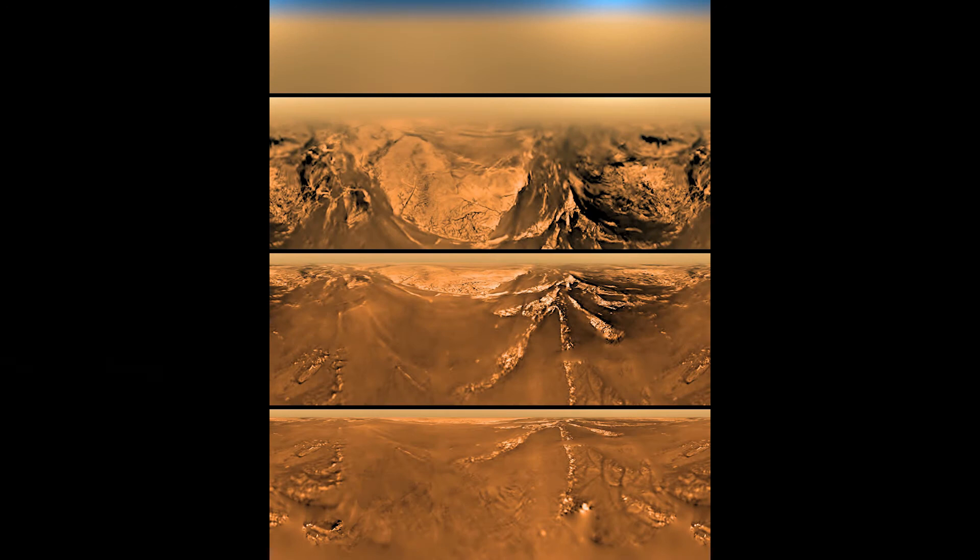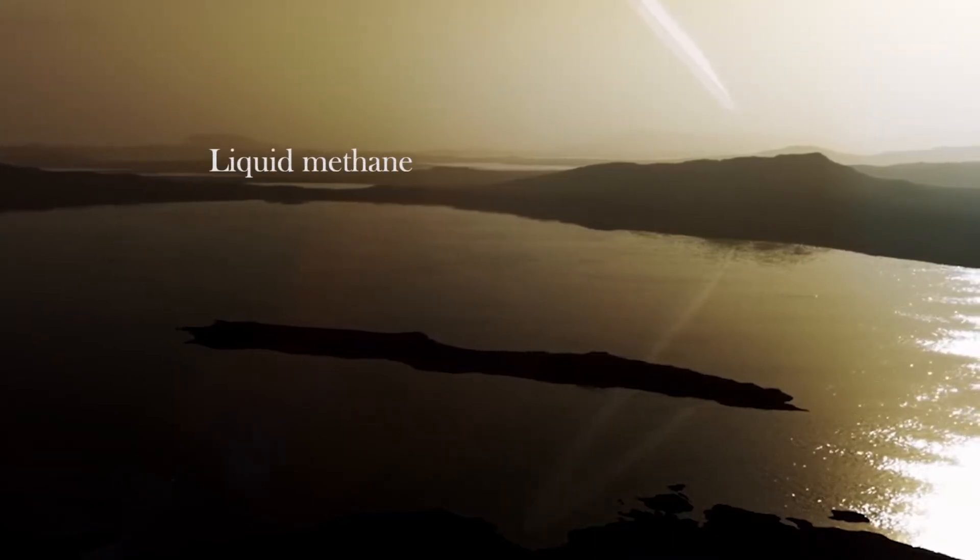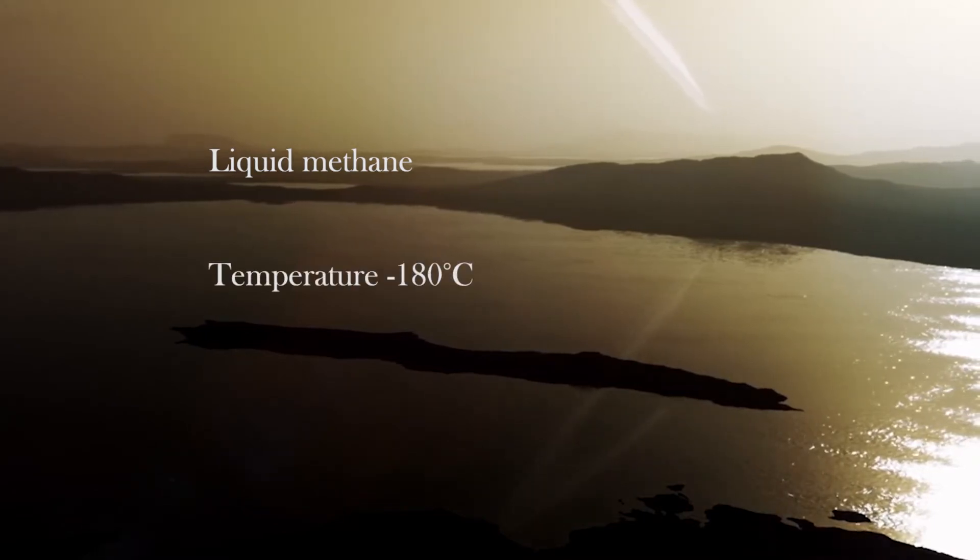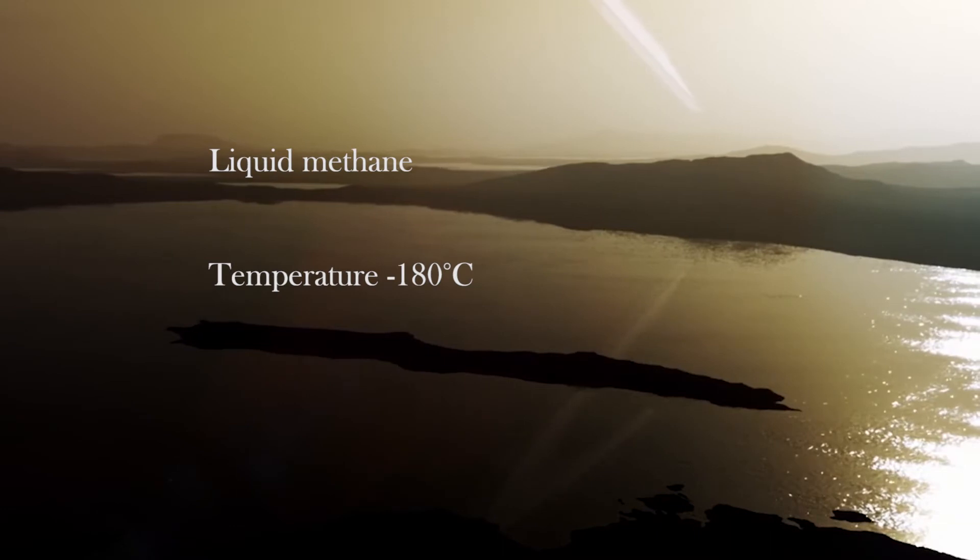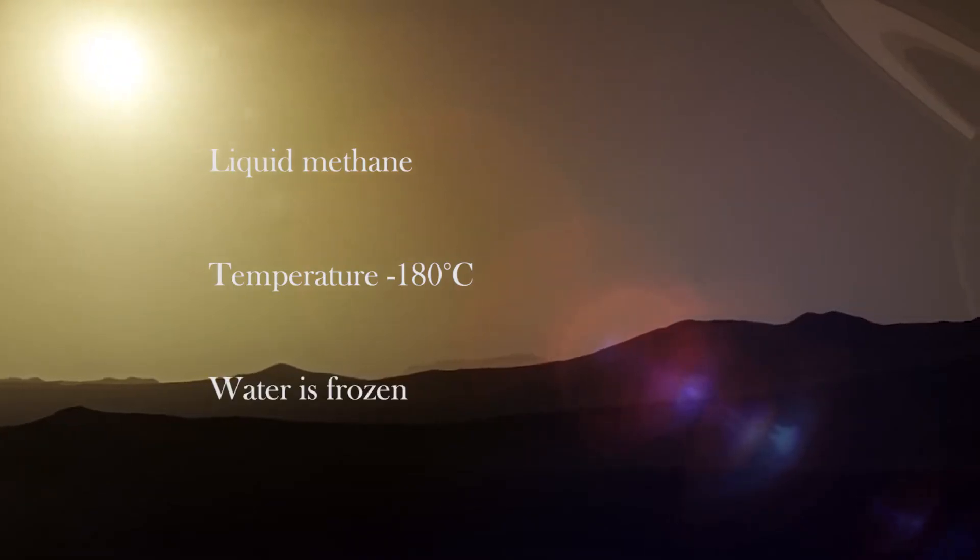For example, there is liquid on the surface of Titan, but it is not water, it is methane. Because of the temperature being on average negative 180 degrees Celsius, everything is shifted along a scale of volatility. Water is frozen and solid, and methane behaves like water does on Earth.